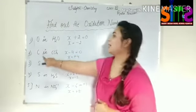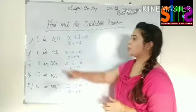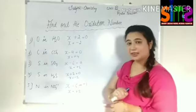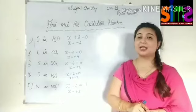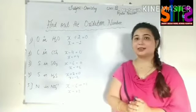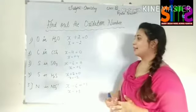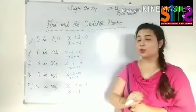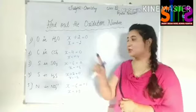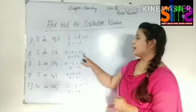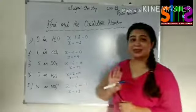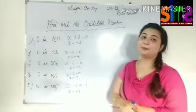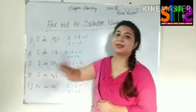Next, look at carbon in CCl₄ — carbon tetrachloride. You have to find out the oxidation number of carbon. X plus 4 times chlorine's oxidation number equals 0, because there is no charge present. So if you remove this value using X, you get plus 4. This plus 4 is the oxidation number of carbon.